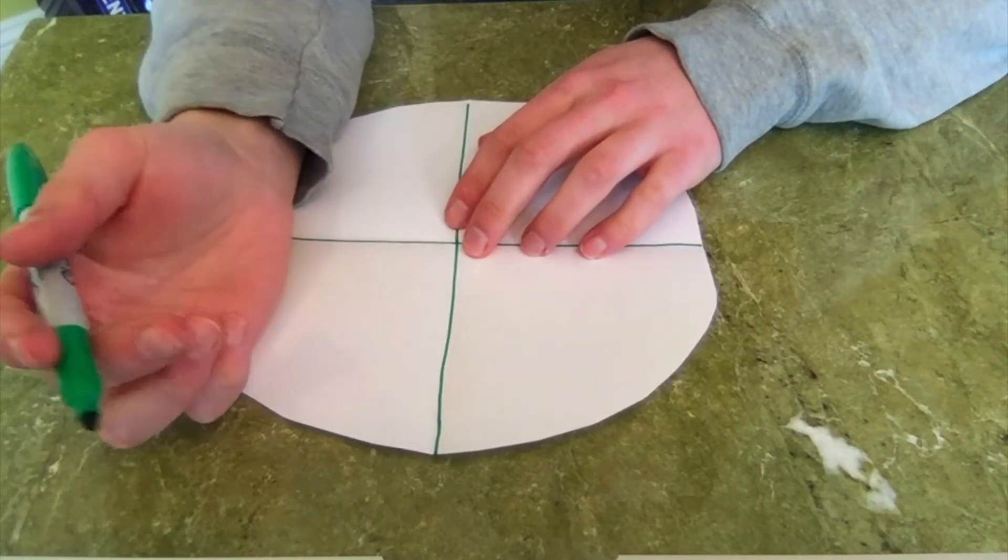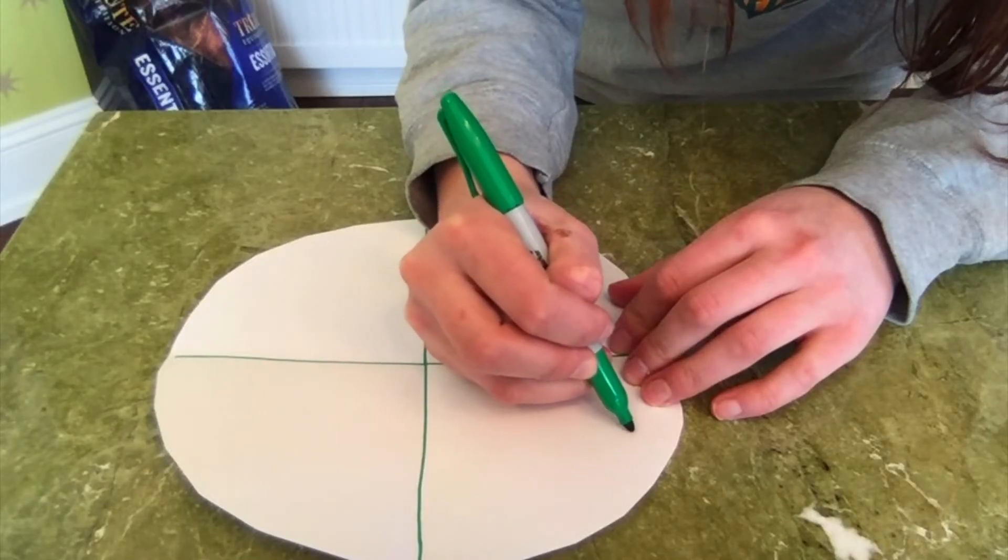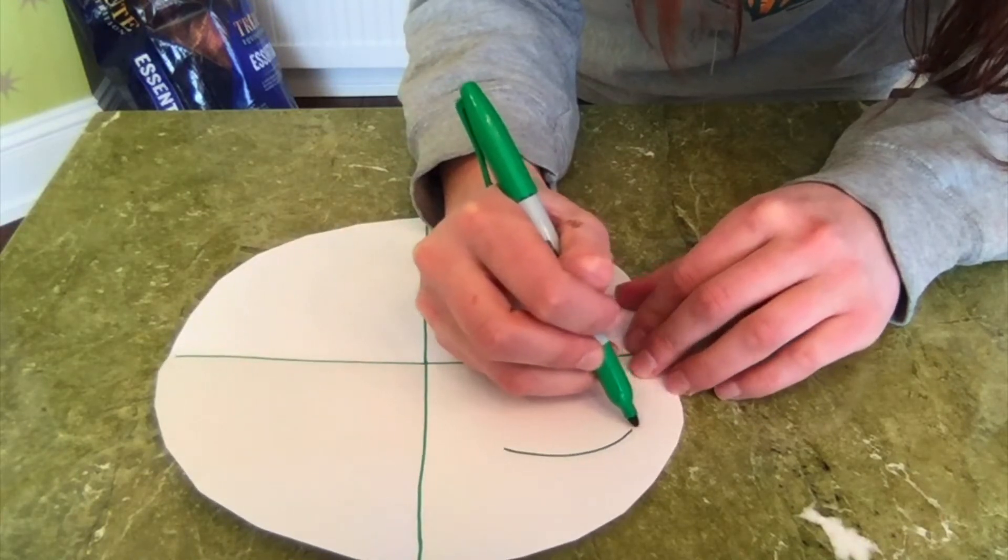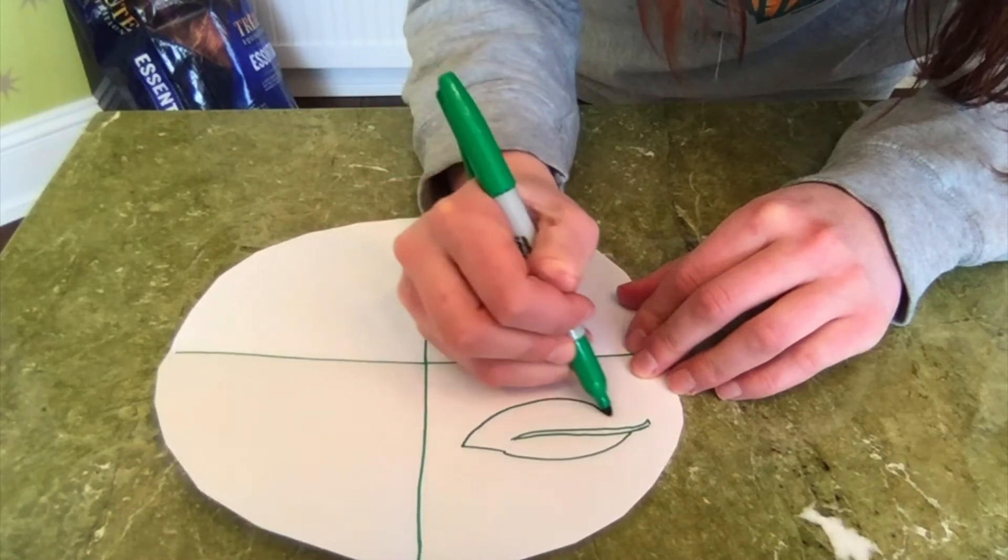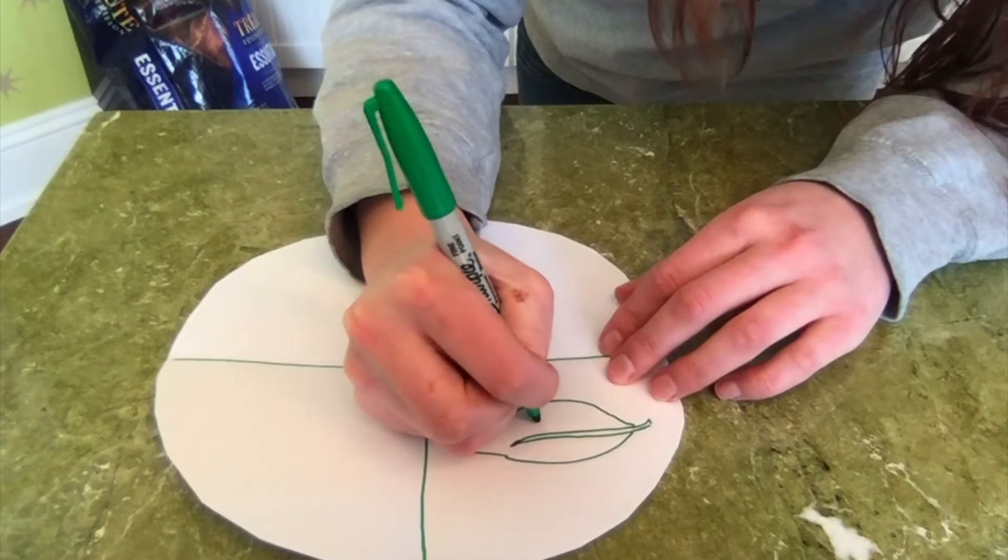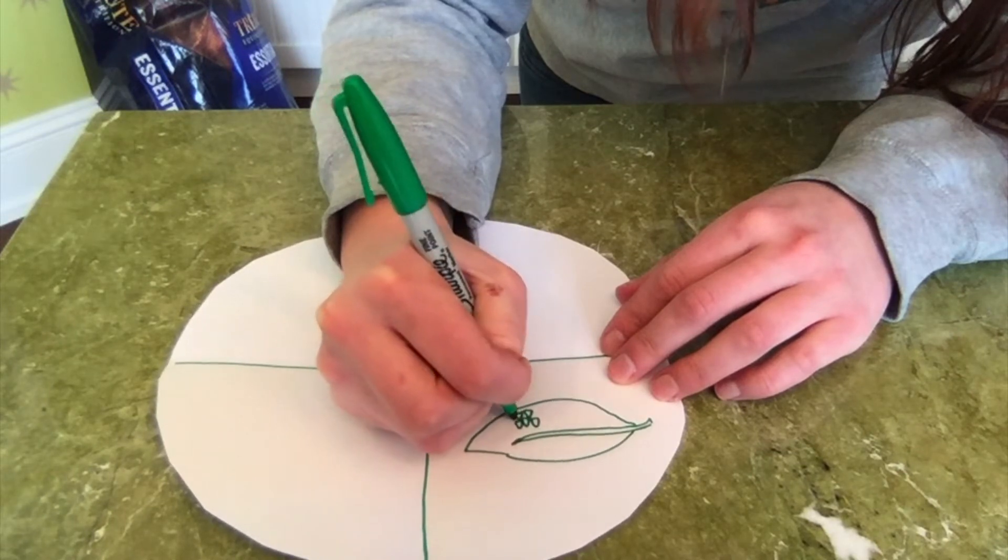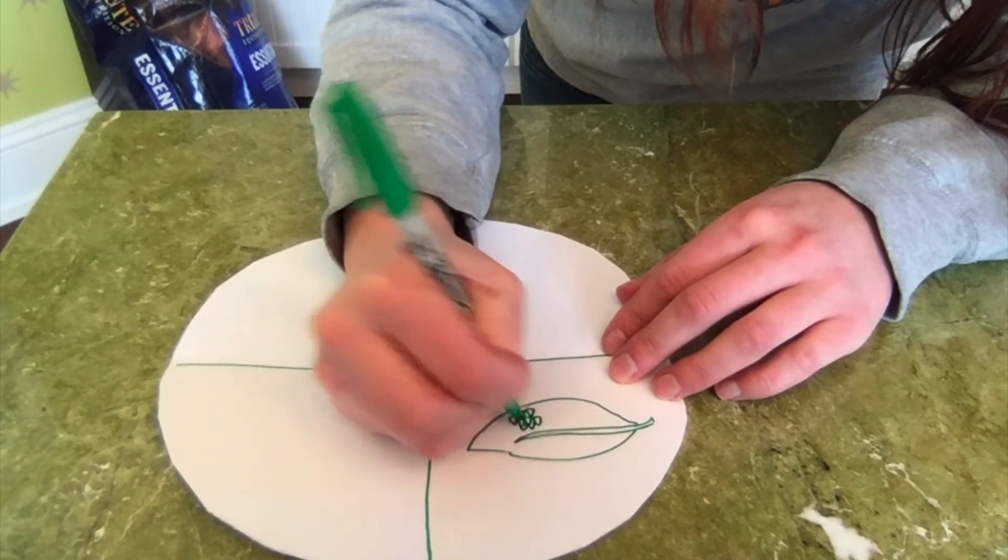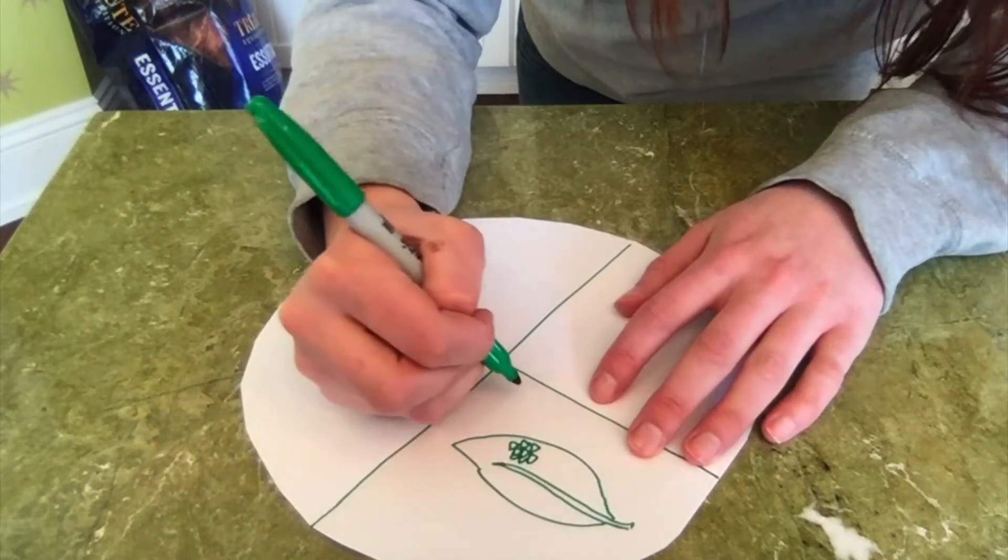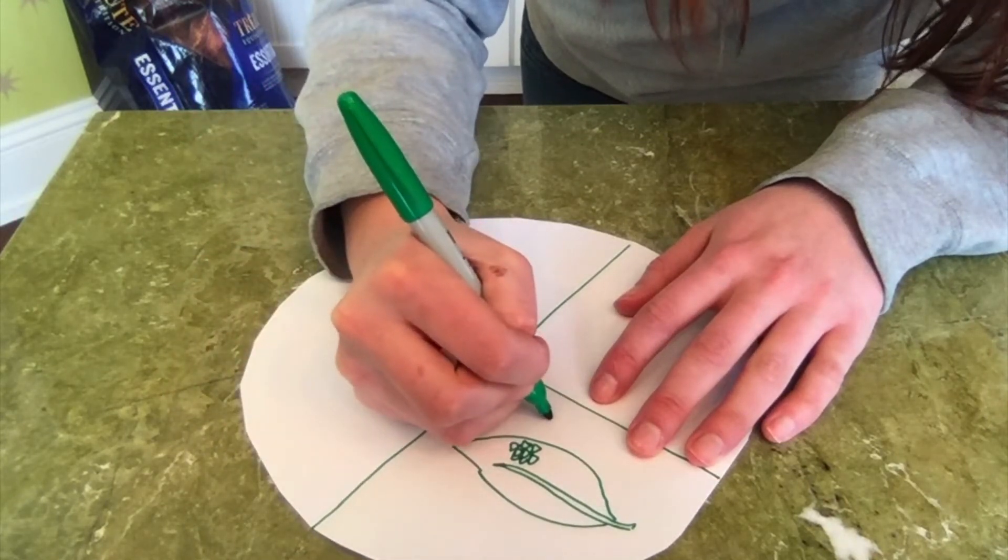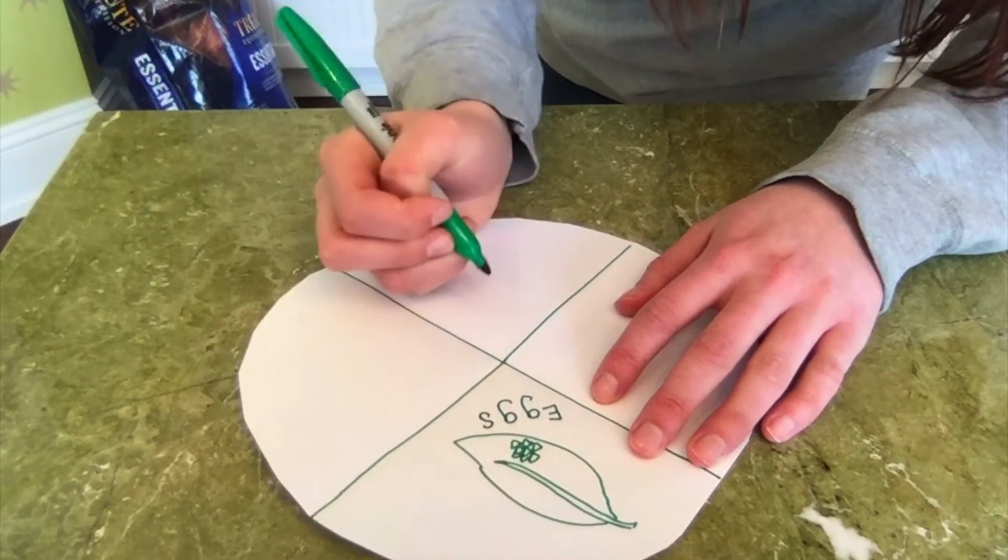How do butterflies start out? Does anybody know? They start out as eggs. Butterfly eggs are usually laid on a leaf. So I'm gonna draw my leaf first. It's gonna have a little stem running through it. And butterfly eggs are just like these tiny little dots that are laid, they don't grow on the leaf. So those are our eggs. And let us label this so we know what it is. At the bottom of our little pizza slice, let's write eggs. E-G-G-S. Great.